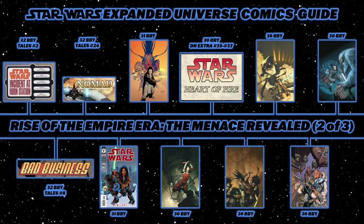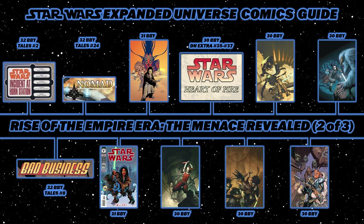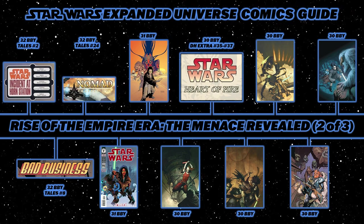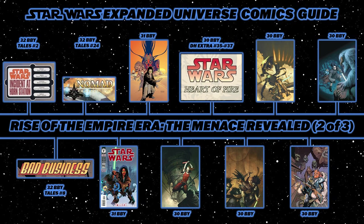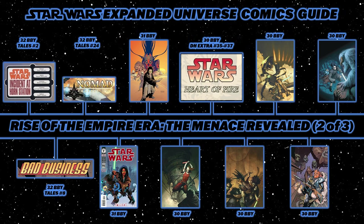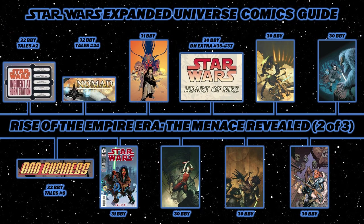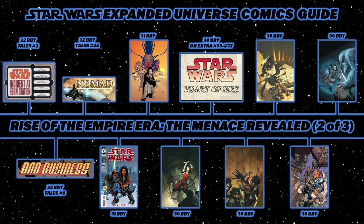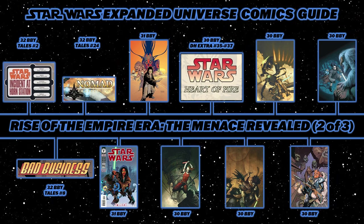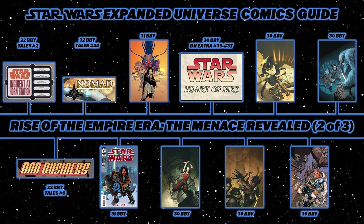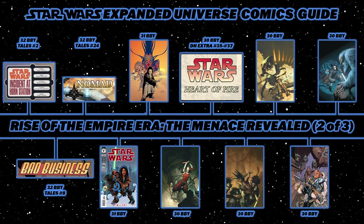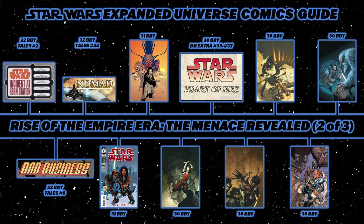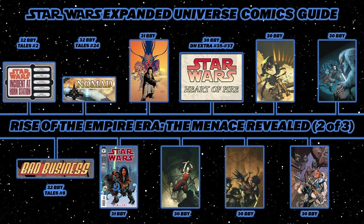Next read Republic: Infinity, issues 23 through 26, also following Quinlan Vos three months after Twilight. Continue with Republic issues 28 through 31 for The Hunt for Aurra Sing. Then the short story Heart of Fire, across Dark Horse Extra numbers 35 through 37, also following Quinlan Vos recovering at the Jedi Temple. Republic: Darkness covers issues 32 through 35, sending Vos to investigate the planet Kiffu.